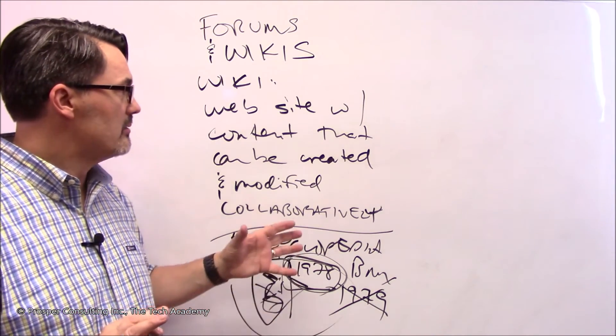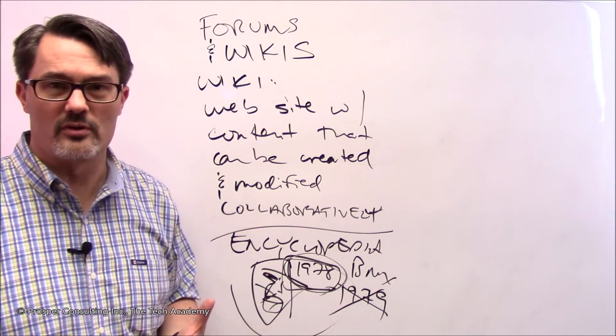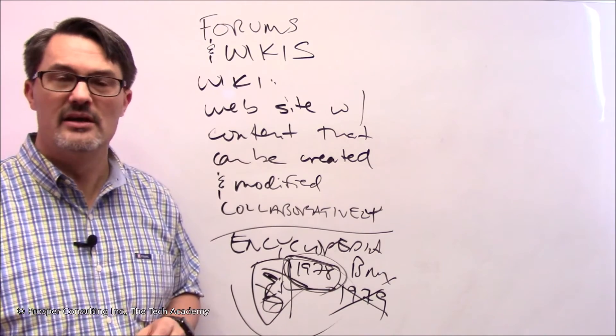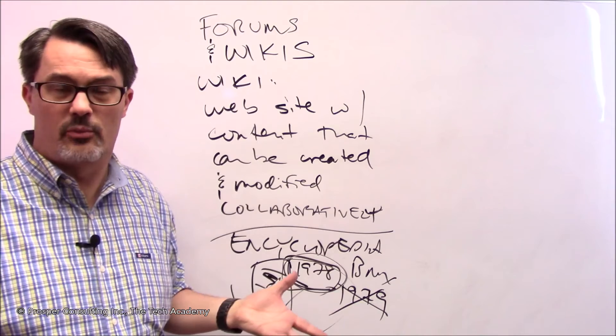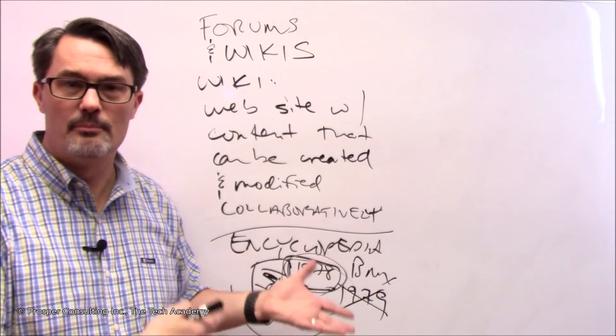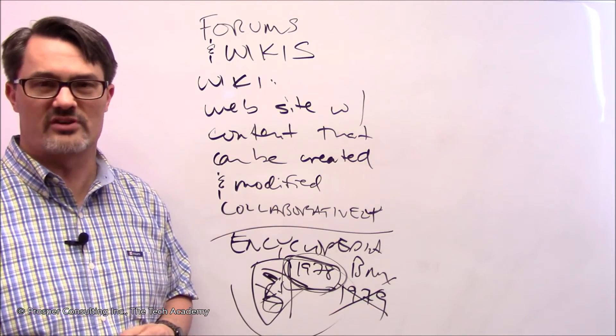Specifically, but because of its nature and the fact that it is a collaborative group endeavor, incorrect or false data can actually be spread through a wiki. It's just something to keep in mind as you create these, modify them, which you will do at some point as a software developer, it's very likely. And of course, as you use them, bear in mind that they're collaborative endeavors and you cannot always trust what's on them.